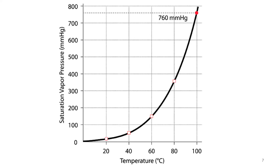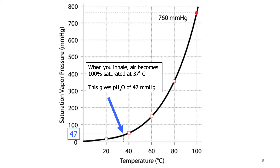However, not knowing the exact amount of water vapor — or humidity, or partial pressure of water in the atmosphere — doesn't mean we're allowed to ignore that factor. This graph shows what the vapor pressure of water is at different temperatures. The blue arrow points to body temperature, 37 degrees Celsius, and this gives us a partial pressure of water of 47 millimeters of mercury. This is important because when you inhale air, your body will moisturize and warm the air, and therefore the air inside your lungs will always have a partial pressure of 47 mmHg of water.